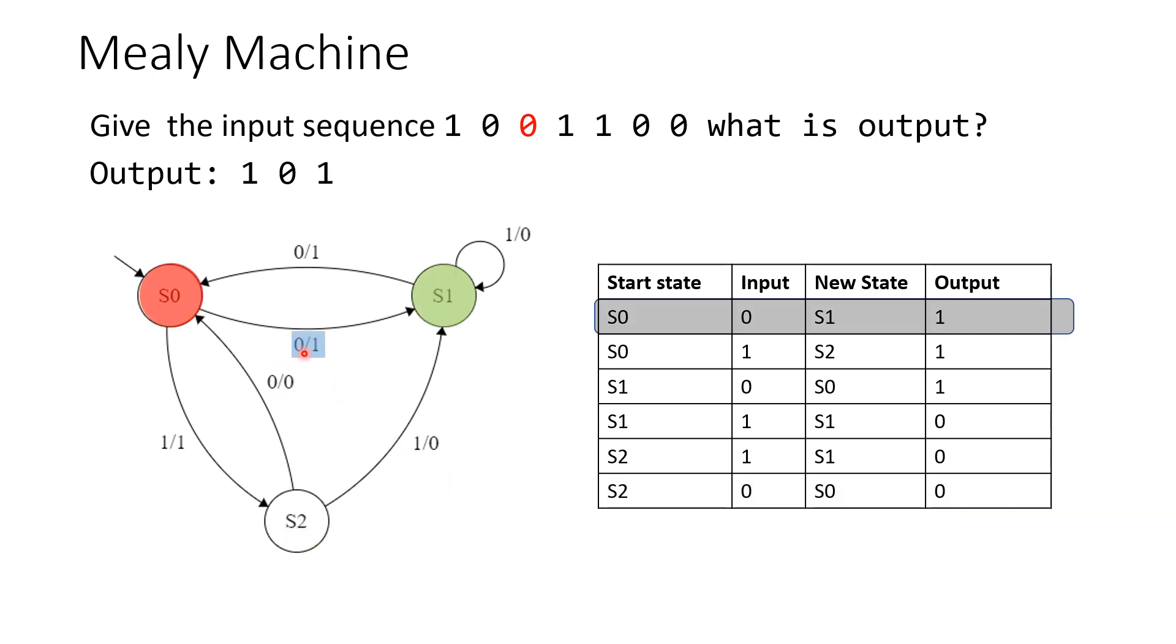Our next input is 0 and so we follow this transition to state 1. So now we're in state 1 and our output so far is 1 0 1. In state 1, because our input is 1, we stay in state 1 so we don't change states.